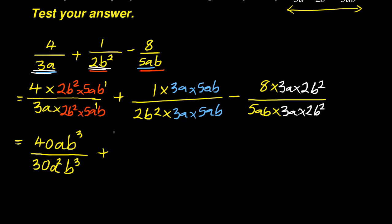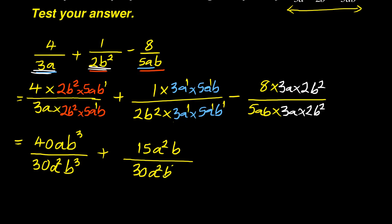Let me move to the second part. Now 1 times 3 times 5 gives me 15. And then a times a is a squared — remember, a to the power of 1 times a to the power of 1 gives 1 plus 1, which is 2. And then I've got only one b, all over. Now 2 times 3 is 6, 6 times 5 is 30. And b squared times b — that's b to the power of 3 — as well as a squared, giving me a squared b to the power of 3. I hope you're already noticing something.